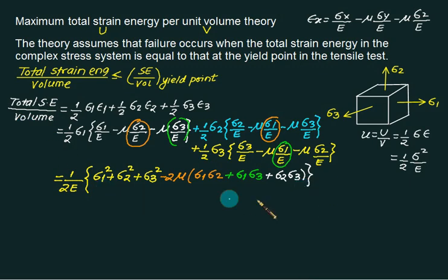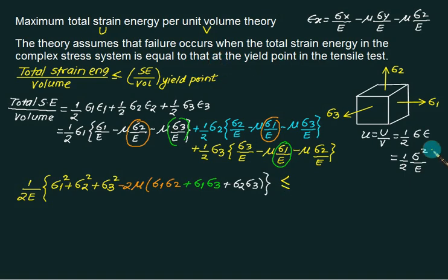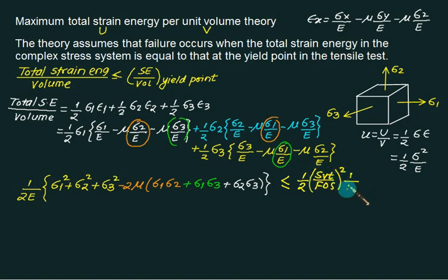This total strain energy must be less than or equal to the strain energy at the yield point. According to the Maximum Total Strain Energy per unit volume theorem, failure occurs when total strain energy equals the yield point strain energy, which is (1/2E) × (SYT/FOS)², since SYT/FOS is substituted as a squared quantity divided by E.